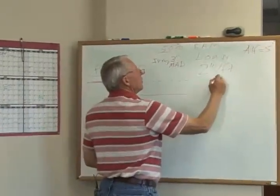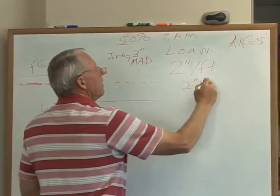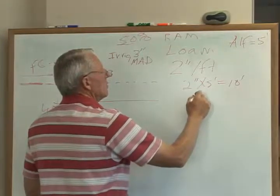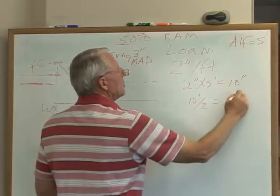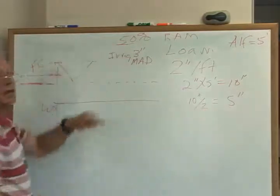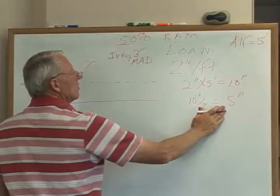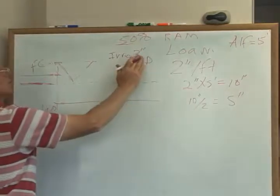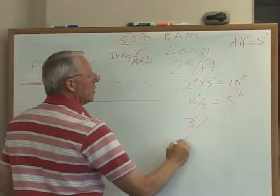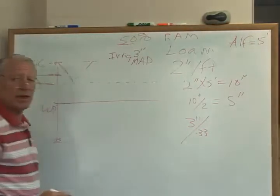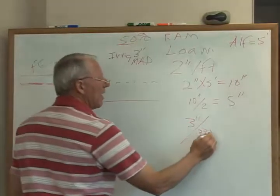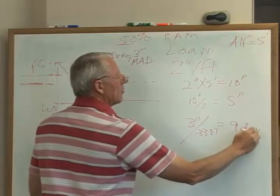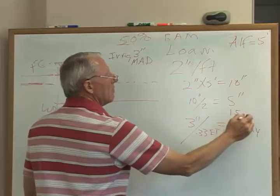So instead of going two inches per foot times five feet equals ten inches, and taking 50% of that ten inches of available water, which is five inches, our irrigation system can only put on three. So we can't use five inches before we irrigate. We can only use three. So this is no longer our management allowable depletion. This is. So now if we have three inches of water, and we're using 33 hundredths of inches of water per day in evapotranspiration, that becomes now a nine-day frequency, and if you remember our frequency before using the five inches was 15 days.